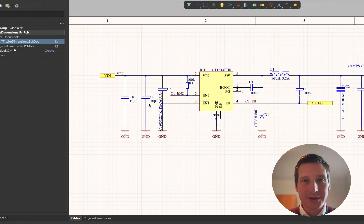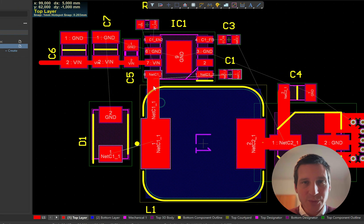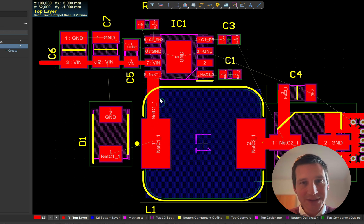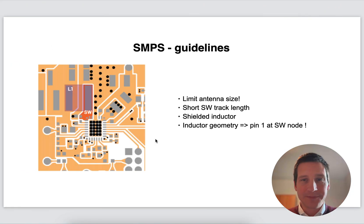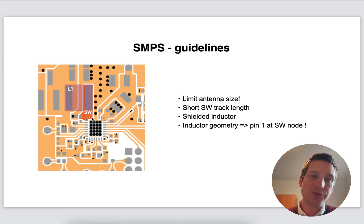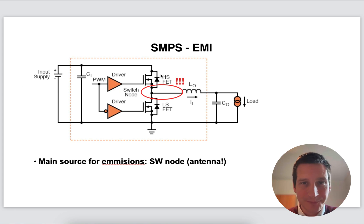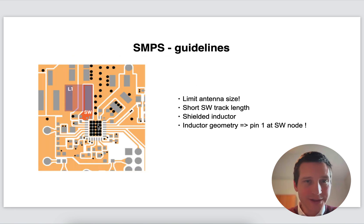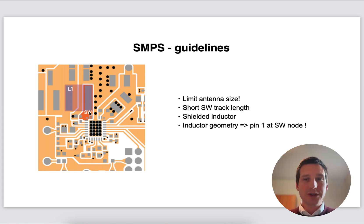Going back to the PCB layout, you can see that we have intentionally kept this track short. The pin 1 indication is on this terminal. Why? Well, you have an antenna, and if you want to reduce EMI, you want to reduce the antenna. So we reduce this track length from the converter — these are integrated switches, the two FETs are integrated here — and then you connect directly to your inductor. This is a very short trace, and you want to keep it short.